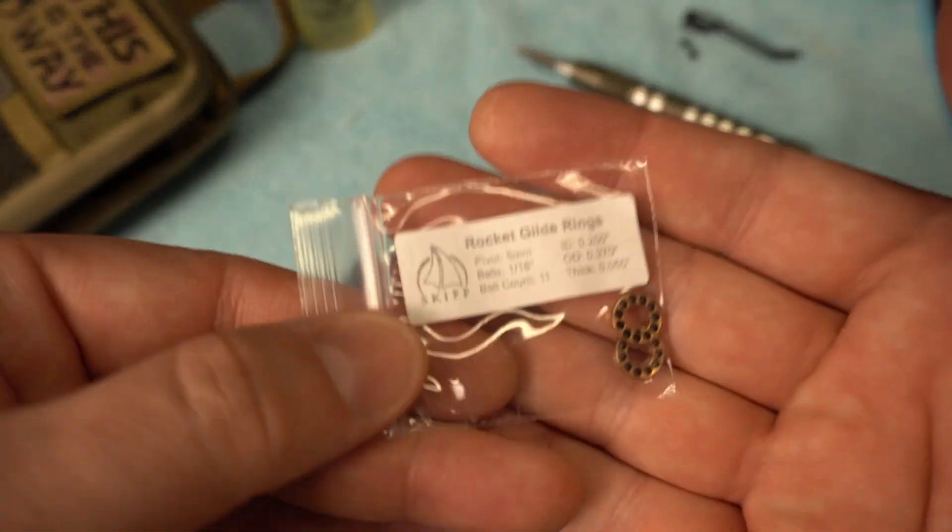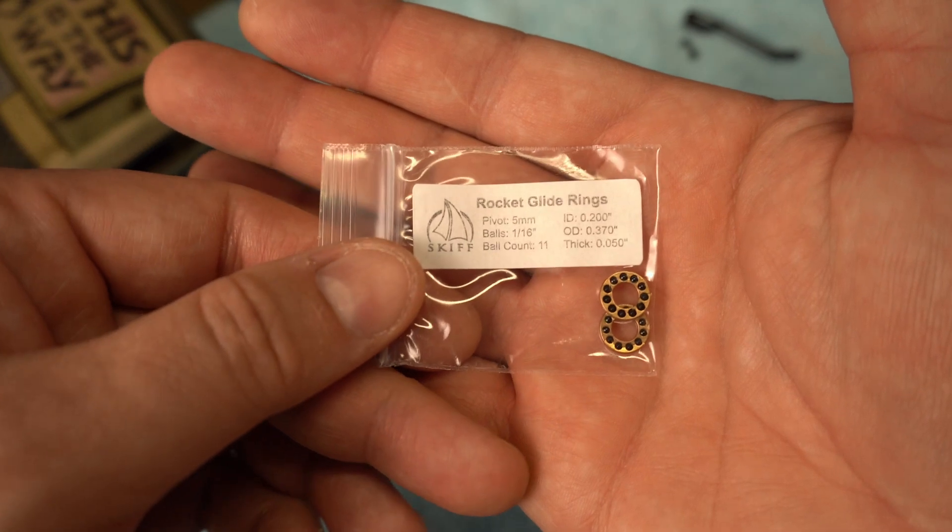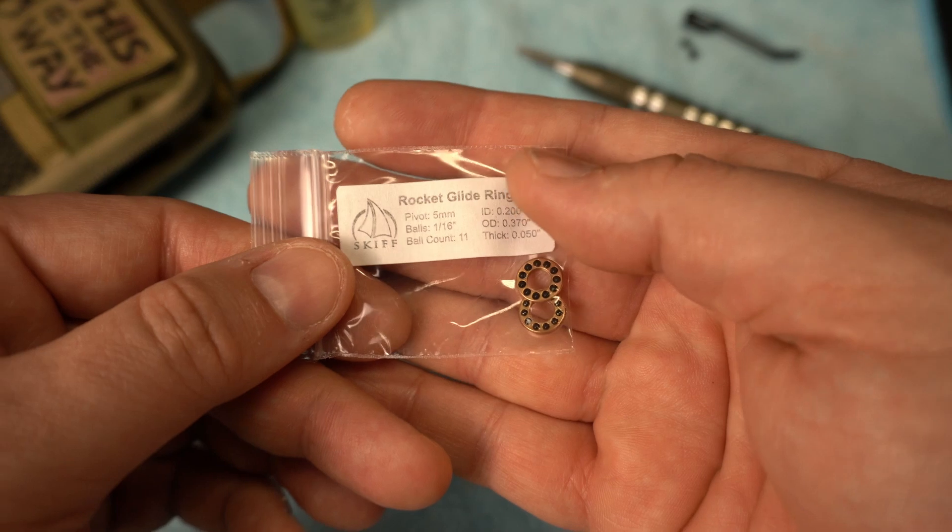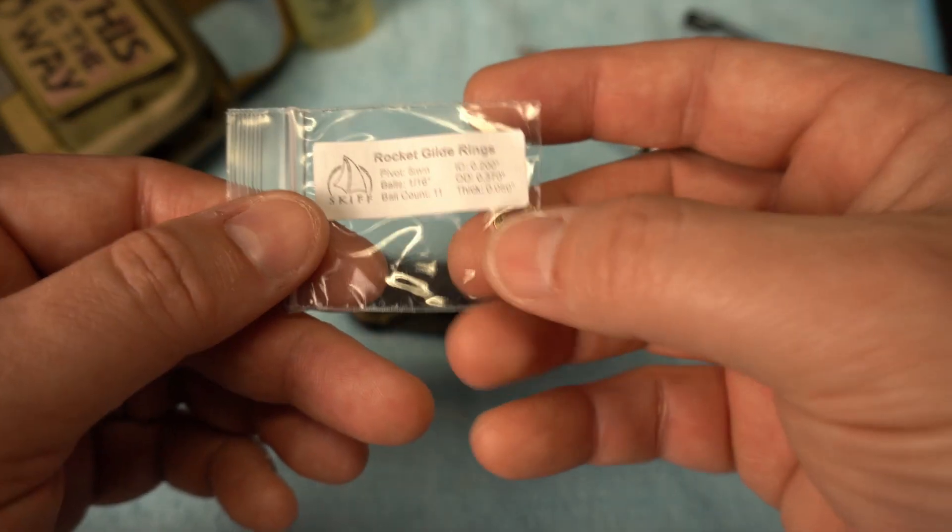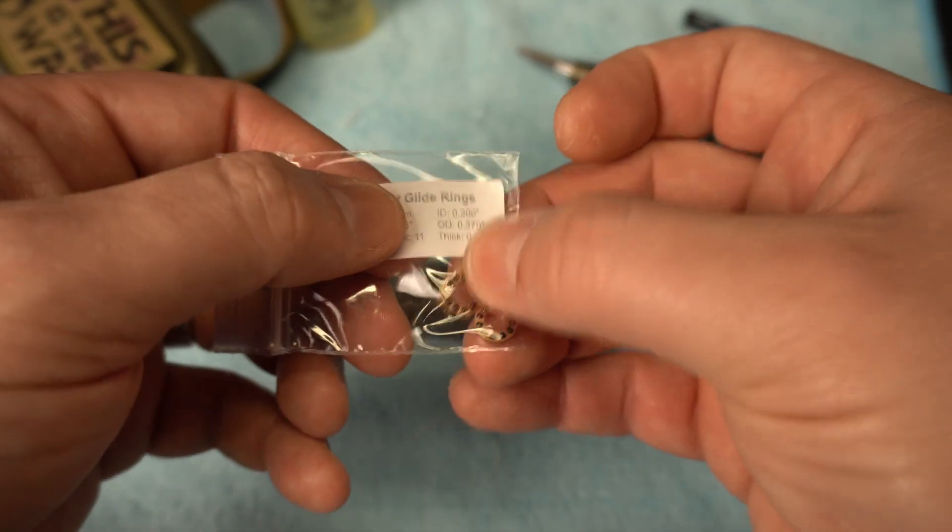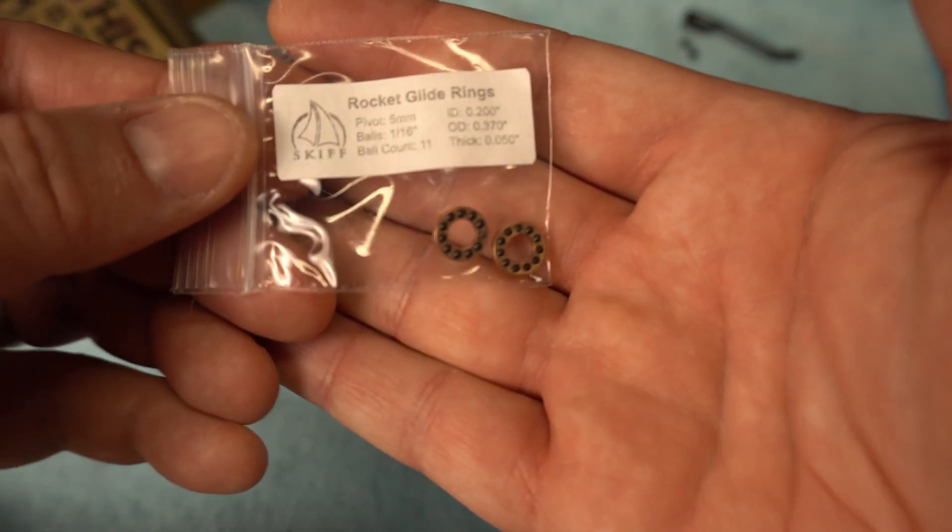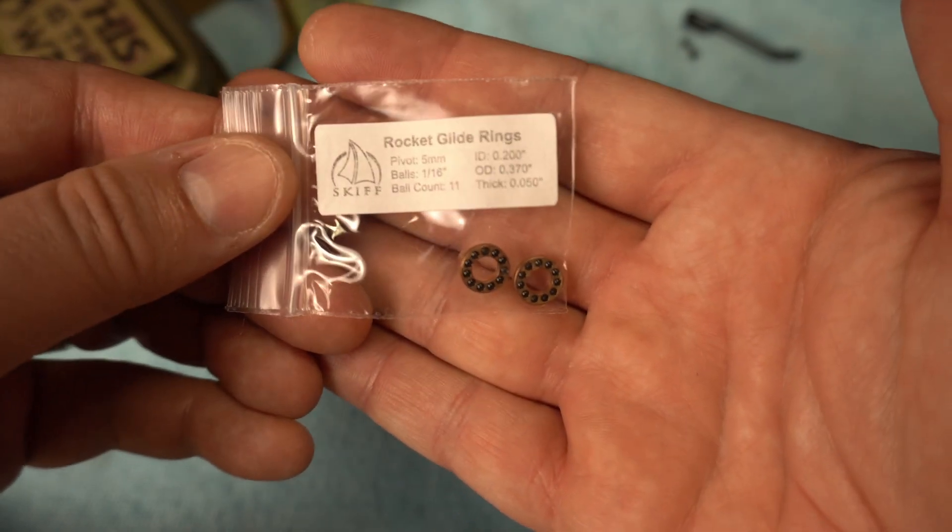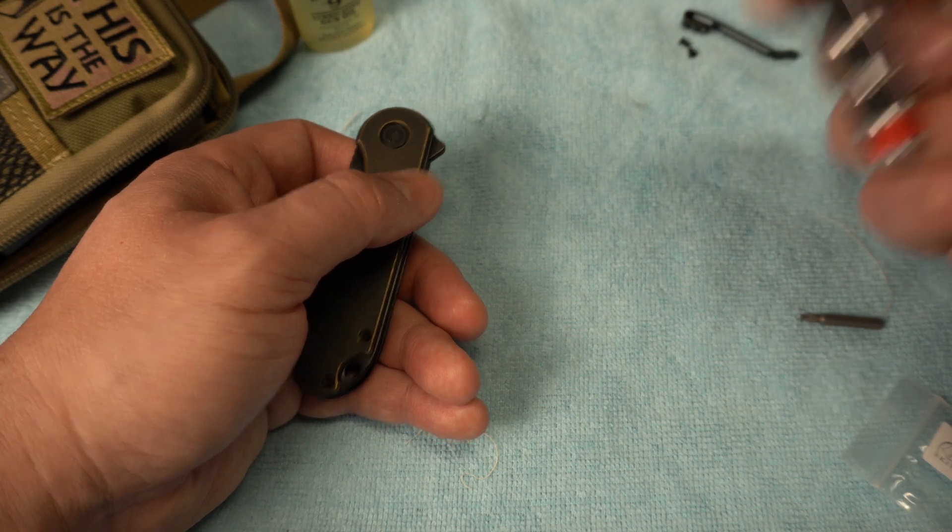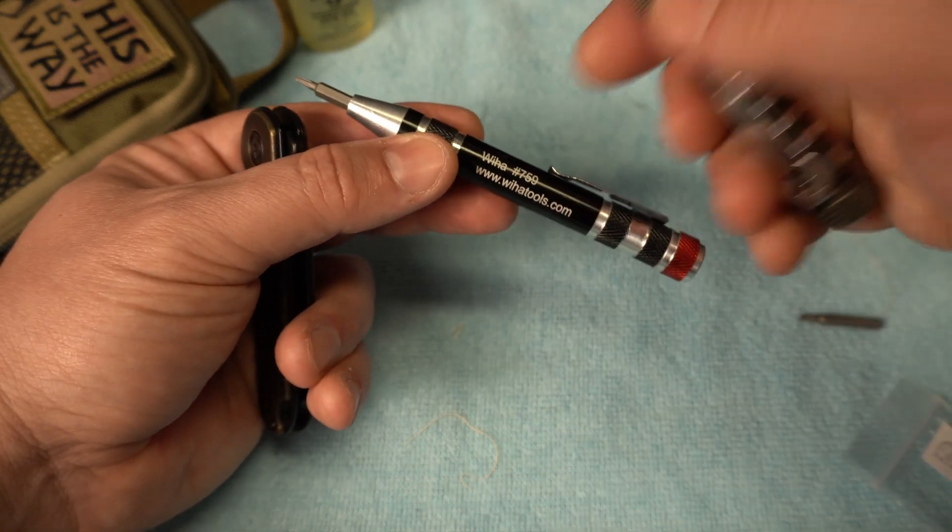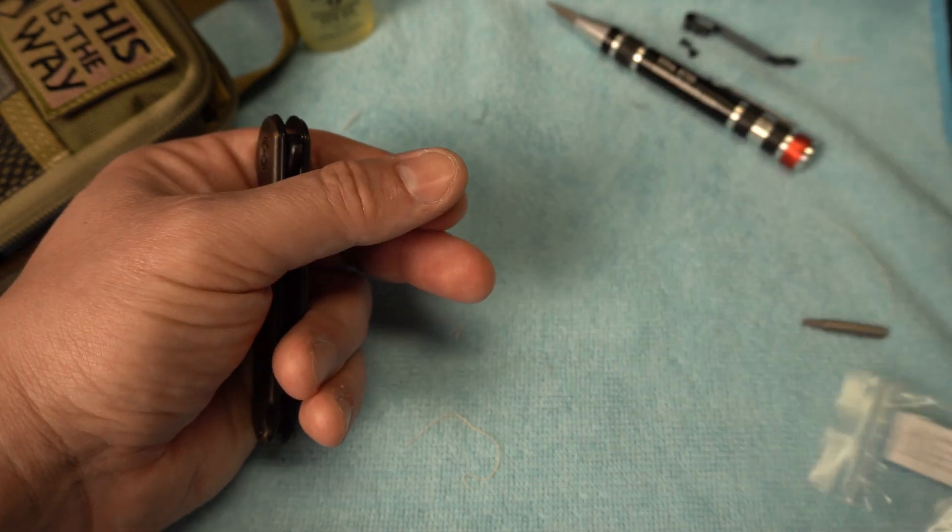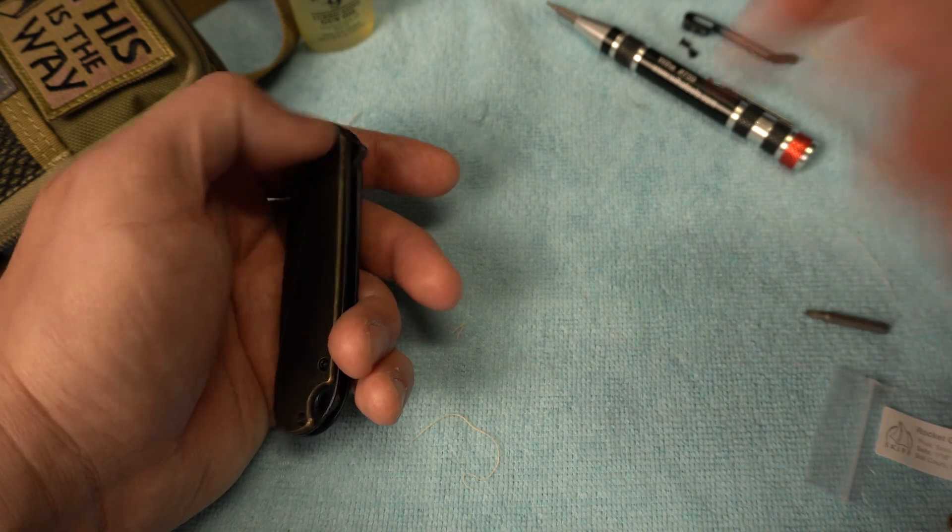Let's go ahead and get into it. These are the Rocket Glide Skiff 5mm, 1/16 inch, 11 ball count. In case you're wondering which ones you would need for the Elementum, those are it right there. I will zoom in so you can get a good look at that. I have all of the bits and tools that I use linked in the description below. I will also link the Skiff bearings and the lubes and everything that I'm using, including the Elementum.